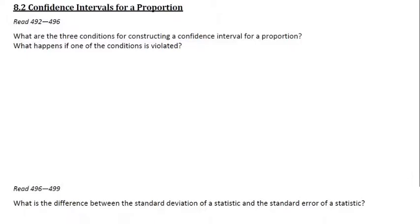All right, this is the start of section 8.2. We're talking about confidence intervals for a proportion, in which case we will use our sample proportion, p-hat, to make an estimate for the true population proportion, p.